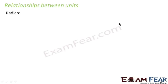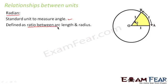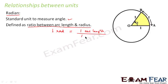When we talk of measuring an angle, we should know the SI unit used for measuring the angle — that is the radian. Radian is a standard unit to measure angle. It is defined as the ratio between arc length and radius. One radian is defined as 1 unit of arc length divided by 1 unit of radius, meaning when the arc length is 1 unit and the radius is 1 unit, that angle is known as 1 radian.